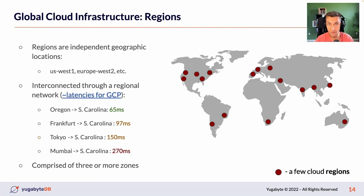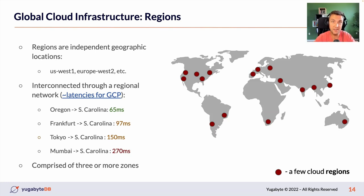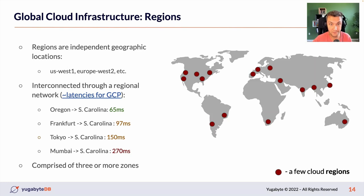Whenever you are designing applications for multi-region use cases, you need to decide accurately where your application instances and database nodes are going to be deployed. For instance, taking Oregon and South Carolina — US West and US East — the round-trip latency across the country is around 65 milliseconds. The round-trip latency between South Carolina US East and Frankfurt is around 97 milliseconds. Between Mumbai and South Carolina it's around 270 milliseconds. The regional network is fast, but we need to pick the best regions for our solution.